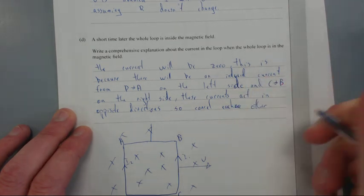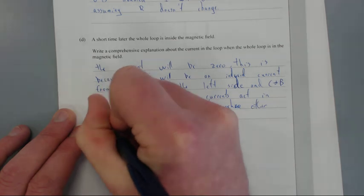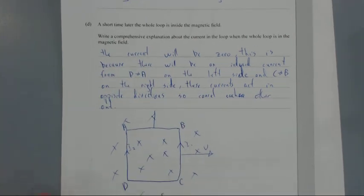And that's why you don't get, if you have a whole loop inside a magnetic field and it's moving across it and it's like a square, you don't get current. Current won't flow.